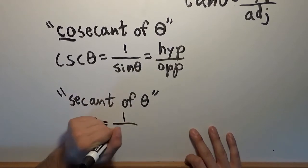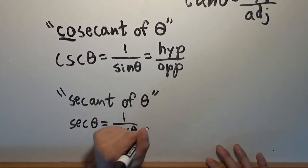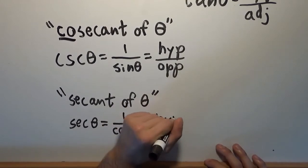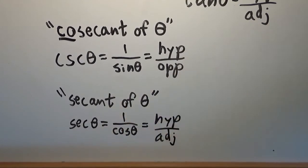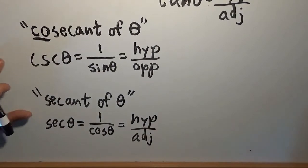And secant, abbreviated sec of theta, is equal to 1 over the cosine. So because cosine is adjacent over hypotenuse, by definition, 1 over the cosine is the hypotenuse divided by the adjacent side. So these are our next two trig functions, and we've got one more function to define.